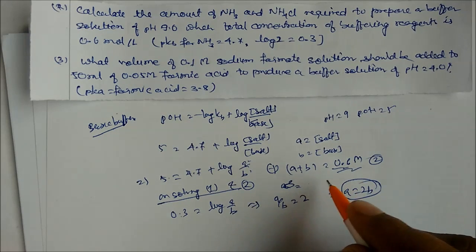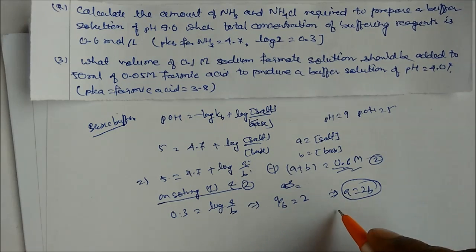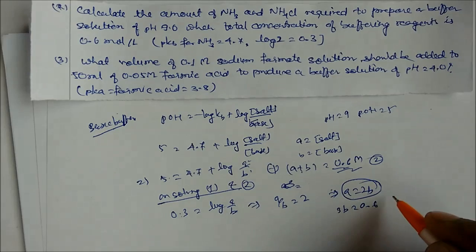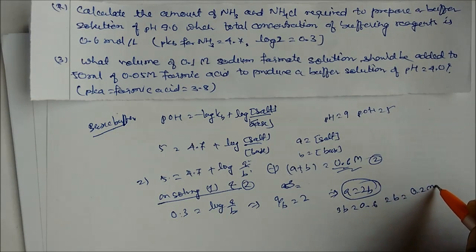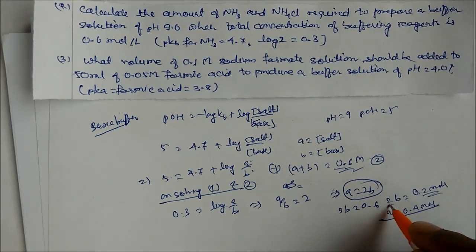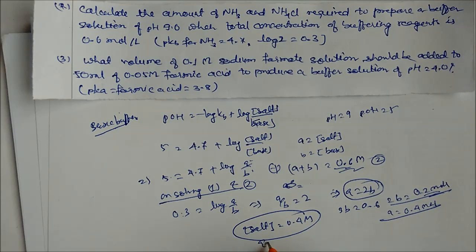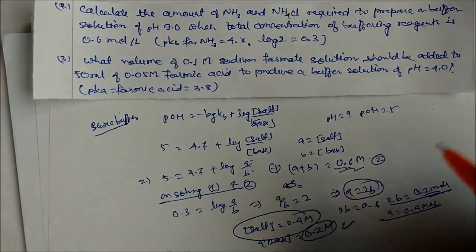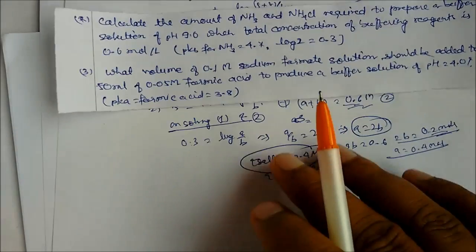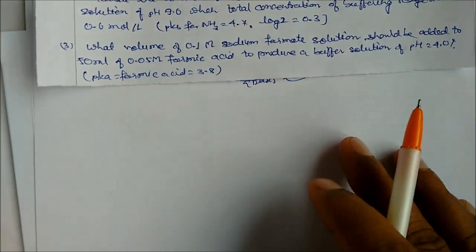Substituting a = 2b into a + b = 0.6 gives 3b = 0.6, so b = 0.2 mol/L. Therefore a = 0.4 mol/L. Concentration of salt (ammonium chloride) = 0.4 mol/L and concentration of base (ammonia) = 0.2 mol/L.